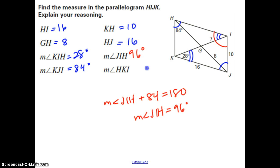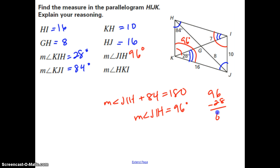For the measure of angle HKI: if we know angle JIH is 96, then the opposite angle is also 96. Subtracting the 28-degree angle within it, 96 minus 28 gives us 68, which is the measure of angle HKI.